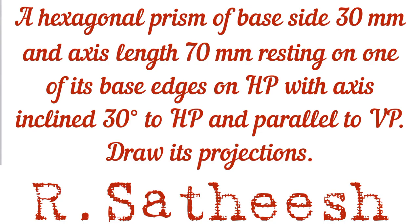Welcome students. Today we are discussing how to draw the projection of given solids. A solid is a three-dimensional object with length, breadth, and height in three directions: x, y, and z. Our problem is a hexagonal prism of base side 30 mm and axis length 70 mm, resting on one of its base edges on HP, with the axis inclined 30 degrees to HP.